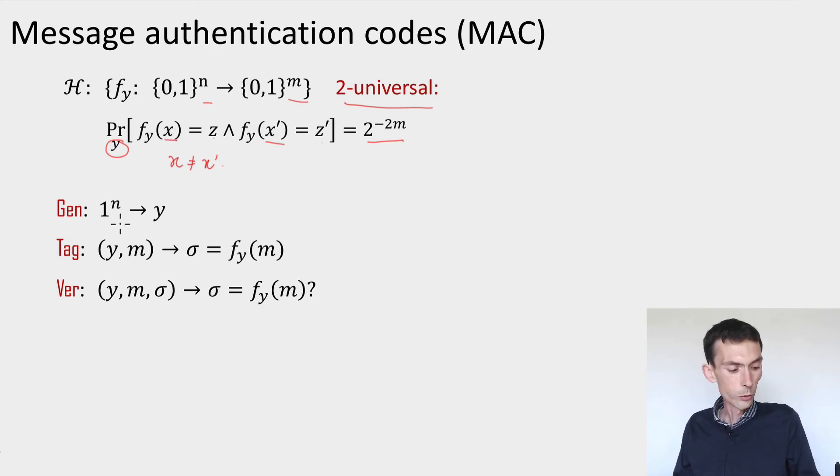So now suppose that you have such a family of two universal hash functions. Here's how you could create a message authentication code out of it. What the key generation procedure will do is simply output the label of one of these hash functions. Now the tagging procedure, given the label of the hash function and the message, which is just an n-bit string, will output as tag the value of the hash function evaluated at the message. And what the verification procedure will do is it'll simply do the same computation, evaluate the hash function on the message and check that the signature is equal to this.